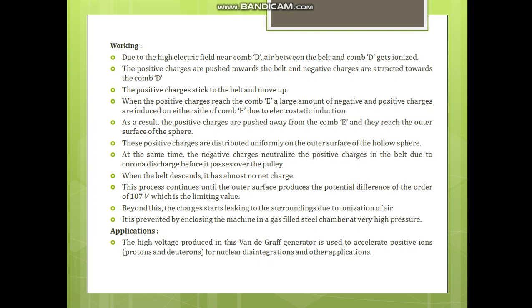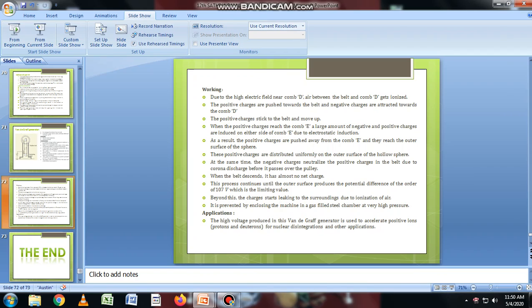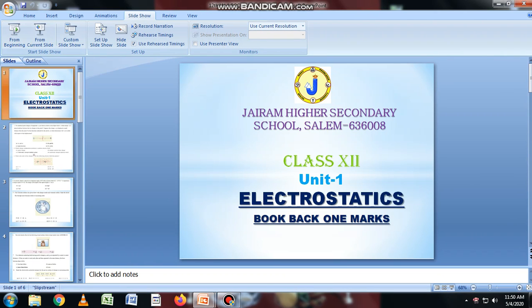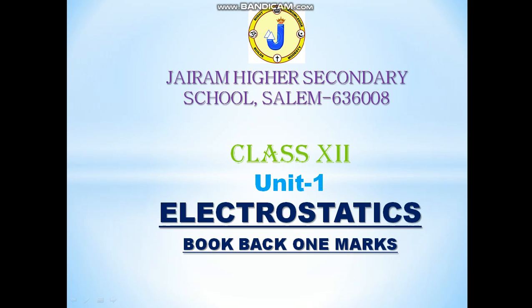Applications: The high voltage produced in the Van de Graaff generator is used to accelerate positive ions like protons and deuterons for nuclear disintegration and other applications. Next is the first question from the book back one marks.